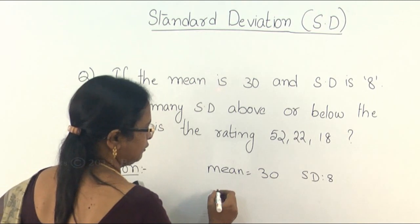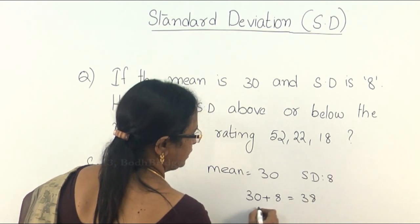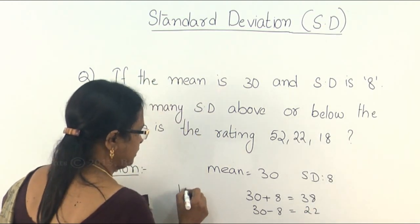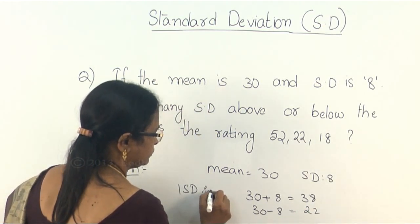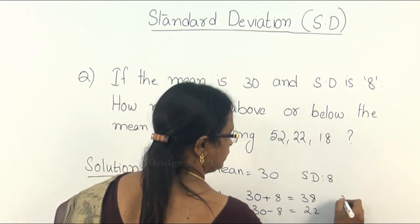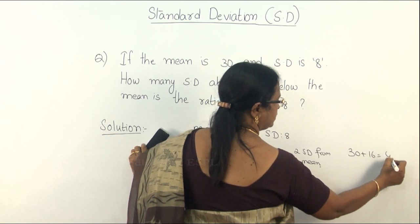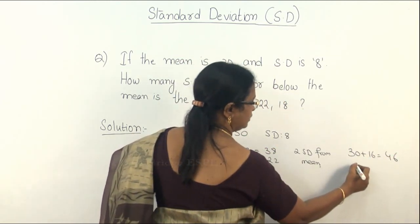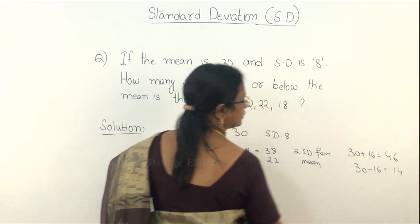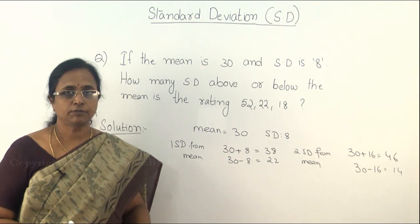One standard deviation away from the mean will be 30 plus 8, which is 38 on the upper side, and 30 minus 8 equals 22 on the lower side. Two standard deviations away from the mean gives 30 plus 16, which is 46, and 30 minus 16, which is 14. These are the general values for one and two standard deviations away from the mean.